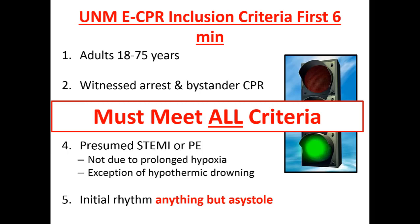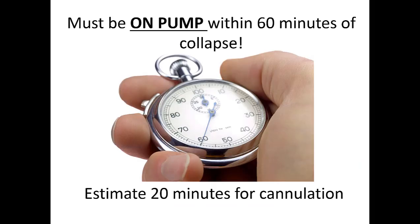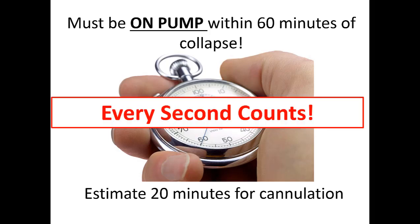Patients must meet every single one of these criteria. Probably the most important make-or-break factor is that they have to be on pump within 60 minutes of collapse. What that means for us is that we need to have them at the hospital within 35 minutes of collapse — that leaves the hospital team about 20 minutes to get those large cannulas in and get them on the pump.